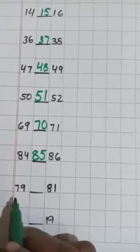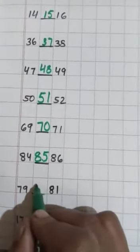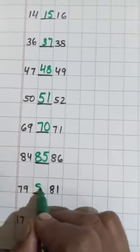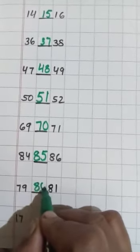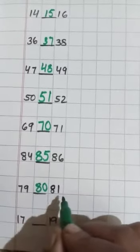In between 79 and 81, which number is comes? 8, 0, 80. 79, 80, 81.